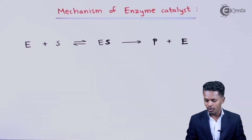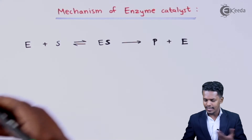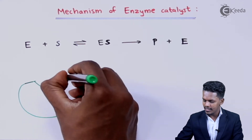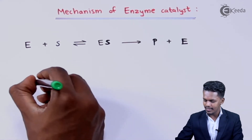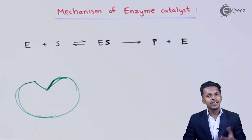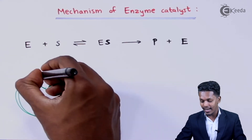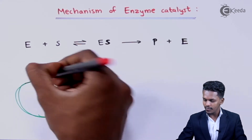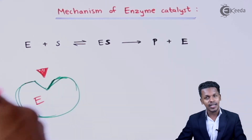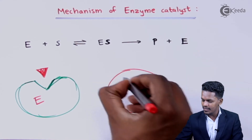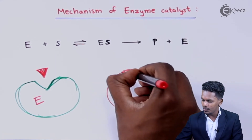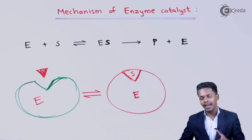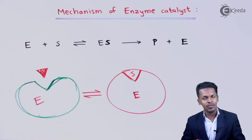Let me give an example. Suppose we have an enzyme of a particular shape — let's say this is the shape the enzyme has. A particular substrate must also have a kind of shape that could fit into it. So this is the enzyme and this is the substrate; they will get locked with each other so as to form a complex.